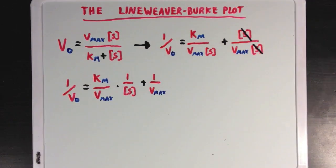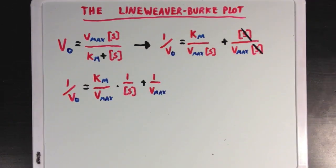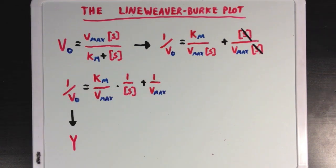And conveniently, we can use this equation to describe a linear function. We can make 1 over Vo our Y, or dependent variable, Km over Vmax our coefficient M, or the slope, 1 over S our X, or independent variable, and then 1 over Vmax our B, our Y-intercept.